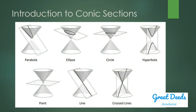The conic sections such as the parabola, ellipse, circle, and hyperbola come as a result of the intersection of two surfaces. One surface is a plane — you can look at it as a paper — and the other is a surface formed by a cone with two nappes. The intersection can be either a parabola, an ellipse, a circle, or a hyperbola.